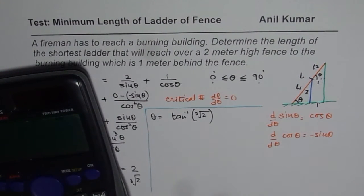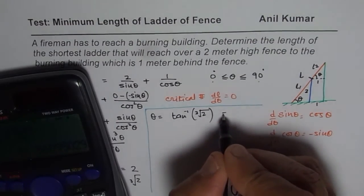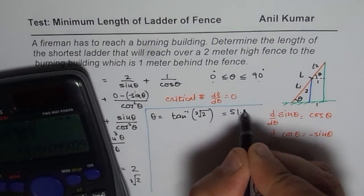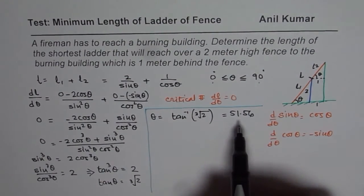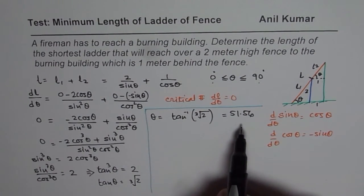So it is shift tan inverse. Within this we have cube root. So we have cube root here, cube root of 2. Bracket close equals to. So that gives us 51.56. So theta is 51.56 for us. So that is how we can find the critical number.